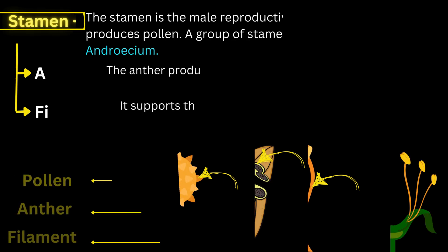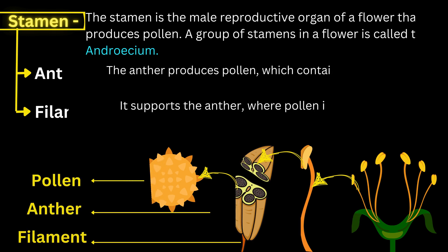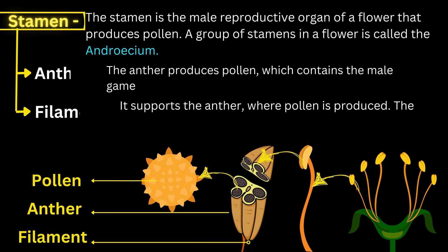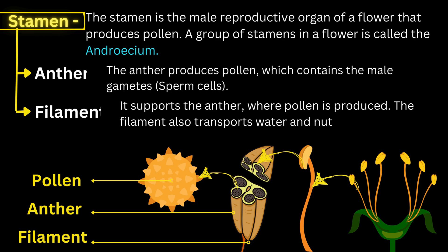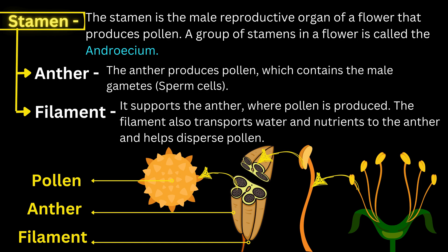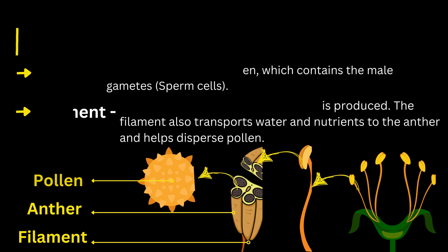In terms of reproductive parts, the stamen is the male reproductive organ of a flower that produces pollen. A group of stamens in a flower is called the androecium. Stamen is divided into two parts: the upper sac-like structure called the anther, which produces pollen that contains the male gametes or sperm cells, and the lower stalk-like structure known as the filament, which supports the anther where pollen is produced and also transports water and nutrients to the anther and helps disperse pollen.